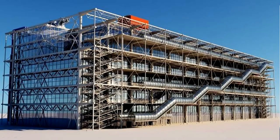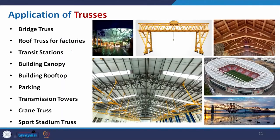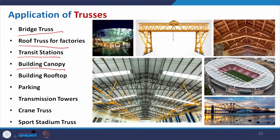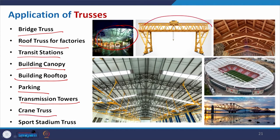Here is another example of a modern building where prismatic truss is used to support it. Coming to the application of trusses summarized: it can be used for bridges, roofs, transit stations like railway stations and metro stations, building canopies, building rooftops temporarily or permanently, parking areas, shade transmission towers, crane trusses, and sports stadiums — where we also use truss to support membrane structures.